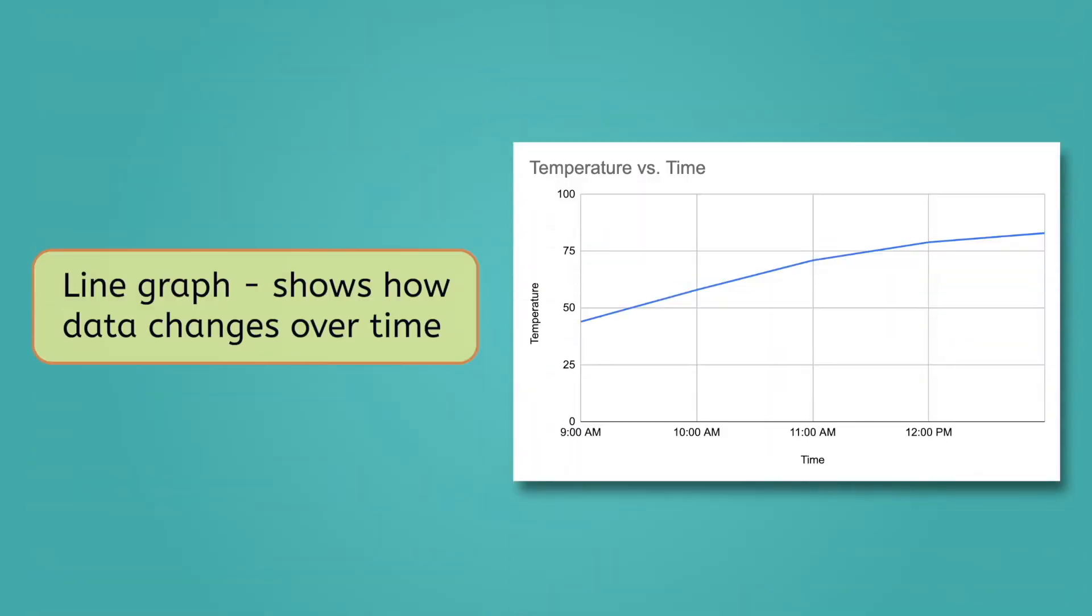A line graph is used to show how data changes over time. For example, a line graph could show how the temperature changes over the course of a day.